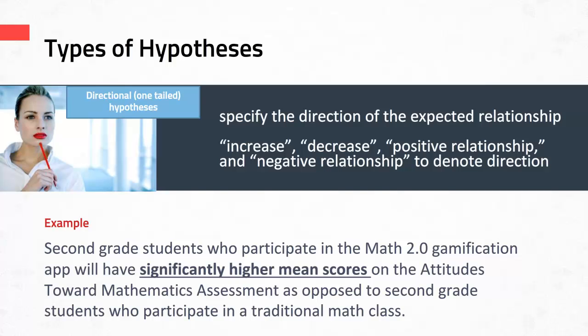Then there is the directional research hypothesis, which specifies that there is a direction of an expected relationship. So when you test the null hypothesis using statistical analysis, you only look for a difference either less than or greater than. Normally when a research hypothesis is directional, you'll use words such as increase, decrease, positive relationship, or negative relationship. An example: second grade students who participate in the Math 2.0 gamification app will have a statistically significantly higher mean score on the attitudes toward math assessment when compared to second grade students who participate in a traditional math class.